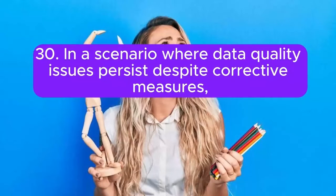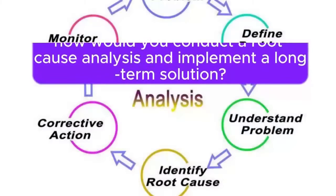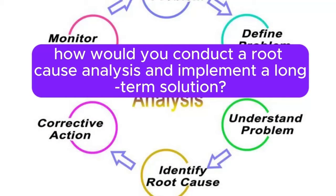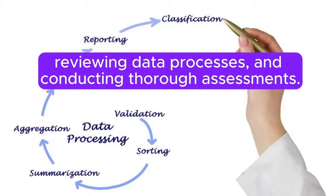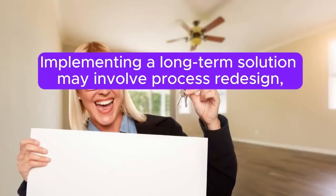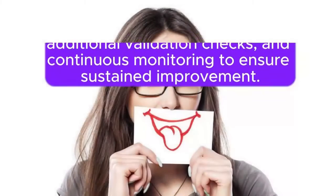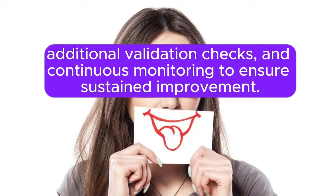30. In a scenario where data quality issues persist despite corrective measures, how would you conduct a root cause analysis and implement a long-term solution? Answer: Root cause analysis involves collaboration with technical and business teams, reviewing data processes, and conducting thorough assessments. Implementing a long-term solution may involve process redesign, additional validation checks, and continuous monitoring to ensure sustained improvement.